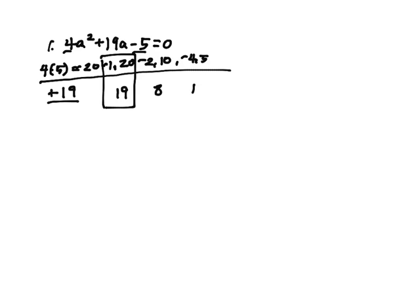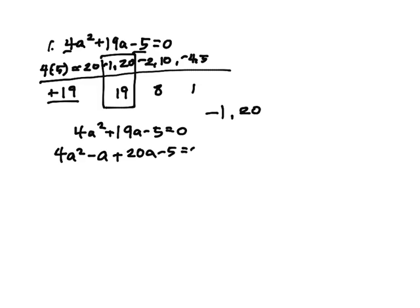Let's go ahead and split up that middle term. So we had 4a squared plus 19a minus 5 equals 0. Let's split up that term with our factor of negative 1 and 20. So that becomes 4a squared minus a plus 20a minus 5 equals 0.